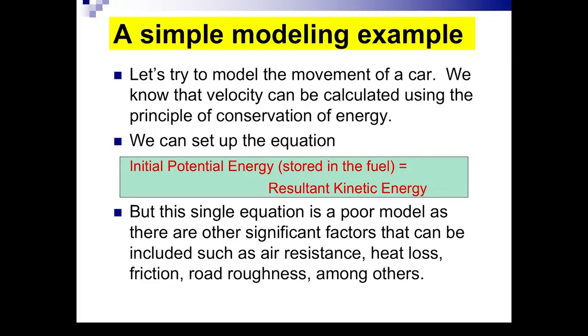Let me give you an example of a very simple modeling project. Suppose we want to study the movement of a car run by an internal combustion engine. From physics, we know that velocity can be calculated using the principle of conservation of energy. So we can set up an equation. The initial potential energy stored in the fuel equals the resultant kinetic energy. Well, that's one equation which says something about the velocity. But if your model consists only of that single equation, then it's a poor model because other factors that affect the velocity or movement of the car are neglected. What are these? Some of these are air resistance, heat loss, friction, road roughness among others.